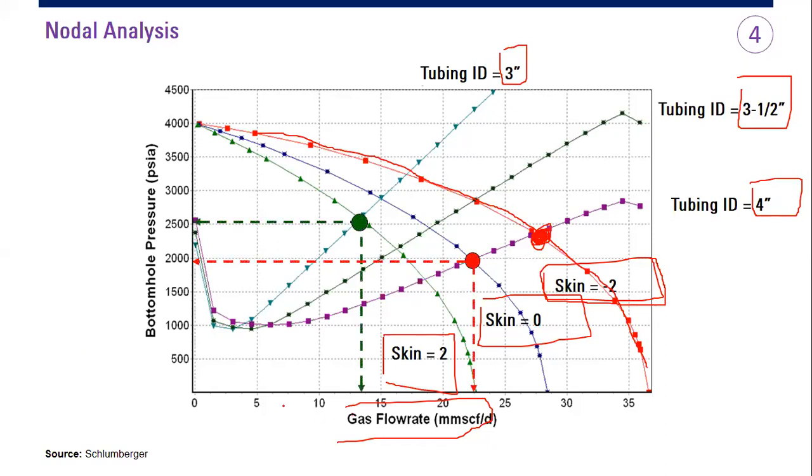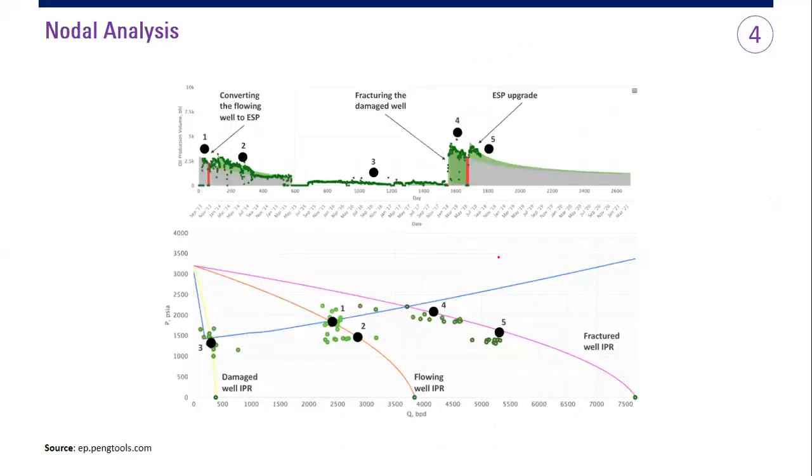And yeah, so you have this scenario and this scenario. And you can also do IPR or nodal analysis plotting based on the history. So like in this case, our first point is here. We construct the IPR. Our operating point is here.